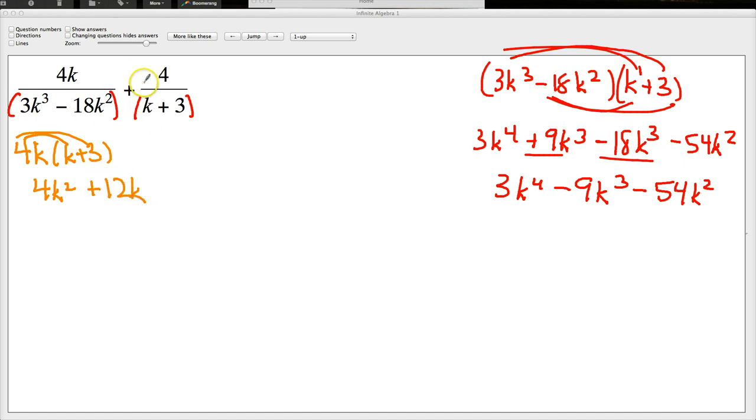Now, there is a common factor here, but I'm not going to deal with that right now. If I multiply this term in the denominator by k plus 3, I need to multiply 4k times k plus 3 as well. And of course, I end up with 4k squared plus 12k. Similarly, with the 4, I need to multiply by this denominator. So 4 times 3k to the 3rd minus 18k squared gives me 12k to the 3rd power minus 72k squared. So these are my two numerators. I'll call them n1 and n2.